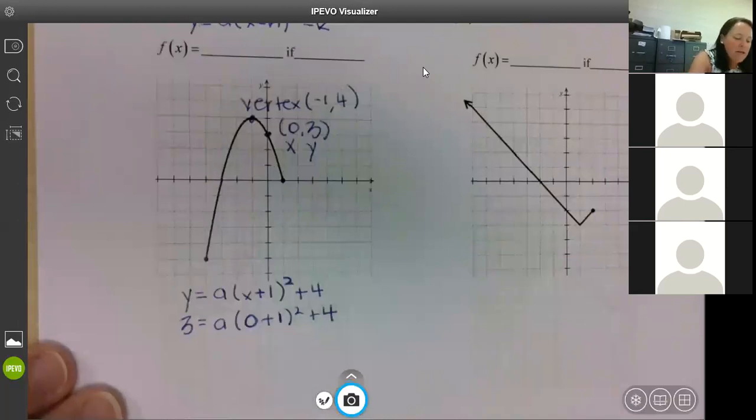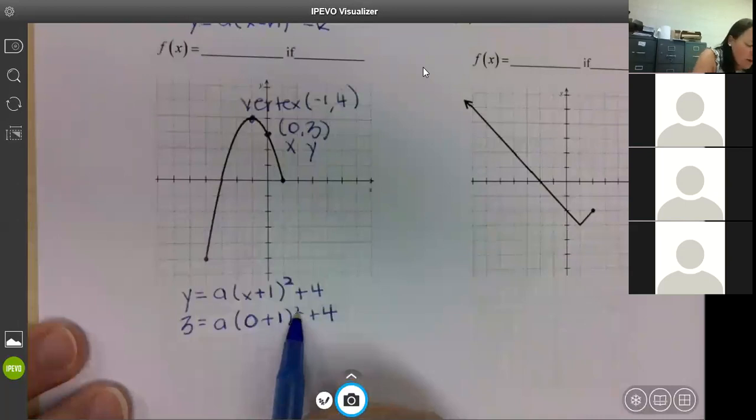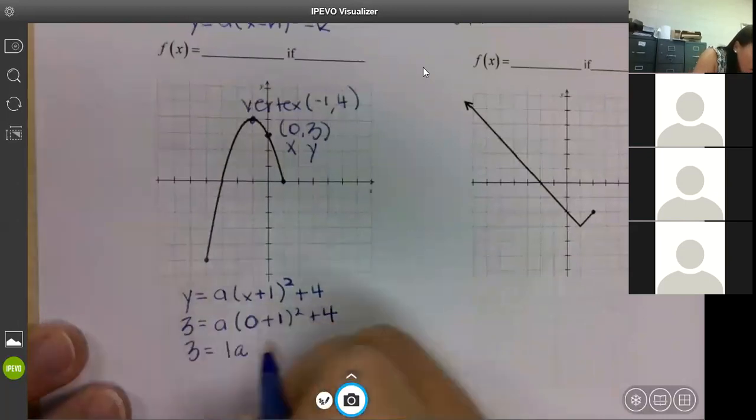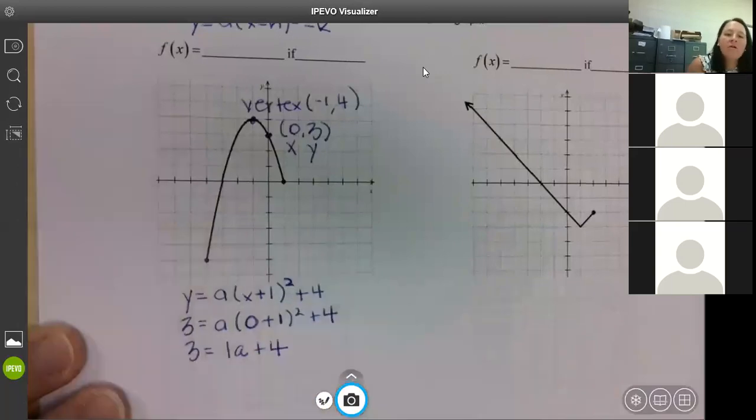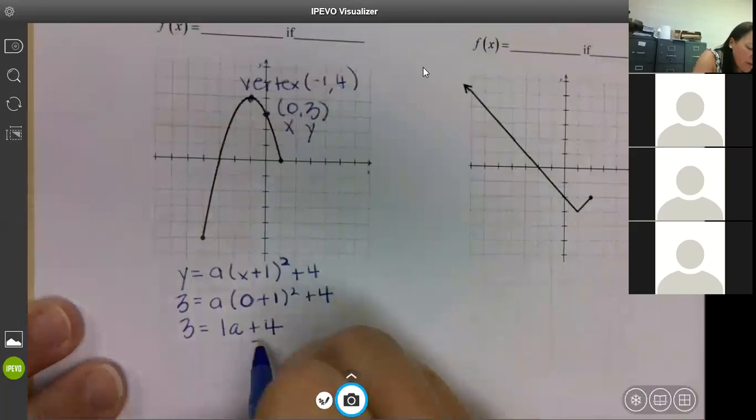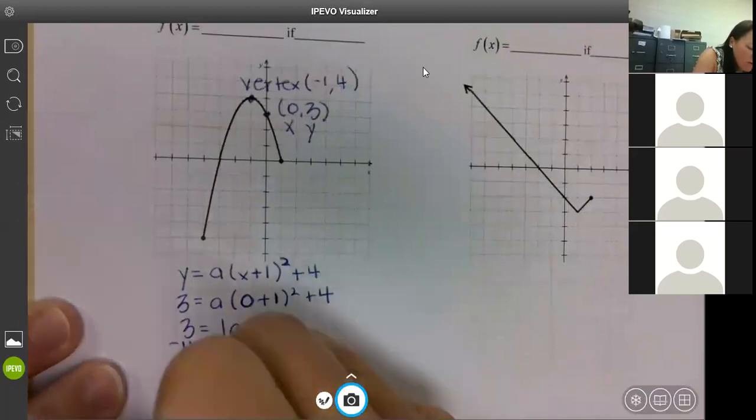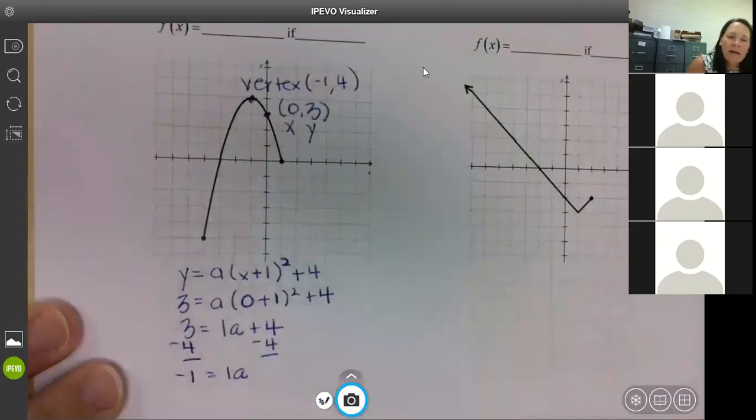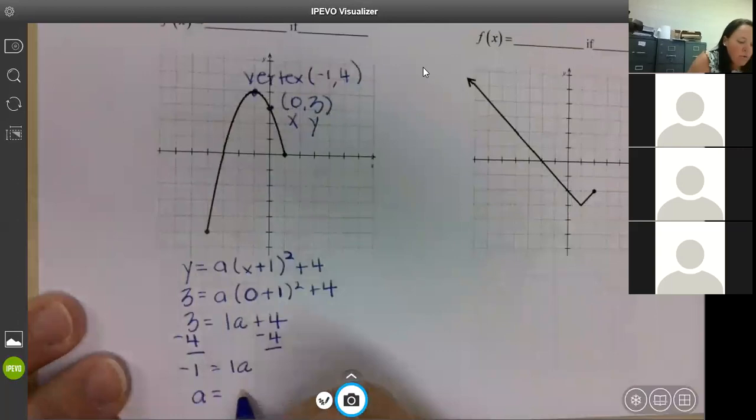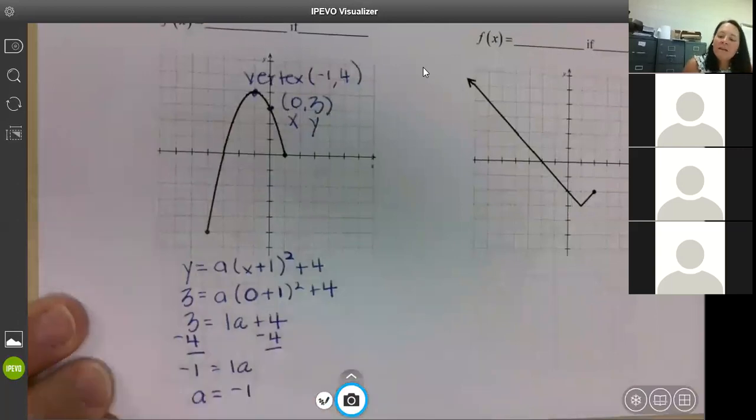We've already done this. 0 plus 1 is 1. Squared is 1. Times a is 1a. Finish it out. Plus 4. Solve it. We're going to subtract 4. We get negative 1 equals 1a. Which is a equals negative 1.